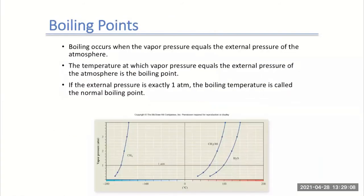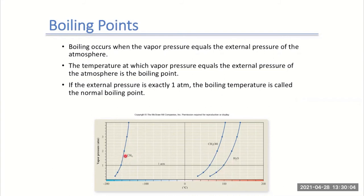This brings us back to boiling points — one of our physical properties. The boiling point occurs when the vapor pressure equals the external pressure of the atmosphere. Looking at the diagram, you can see the different boiling points really have to do with intermolecular forces too. The stronger the intermolecular forces, like in water, the harder it is to break those forces and go from the liquid phase to the gas phase — that's why water has a higher boiling point. Methane, which only has dispersion forces, has a very low boiling point because there isn't much force holding it together, versus the hydrogen bonding that water does.